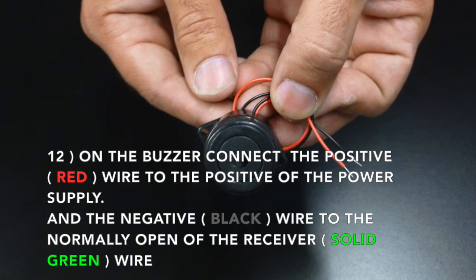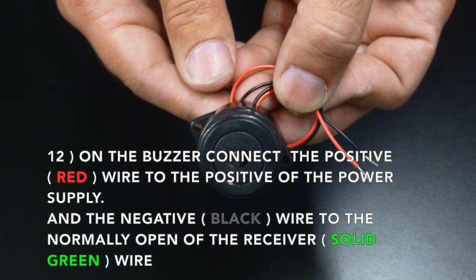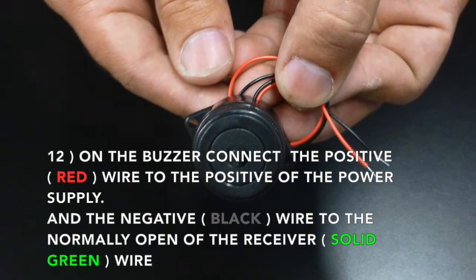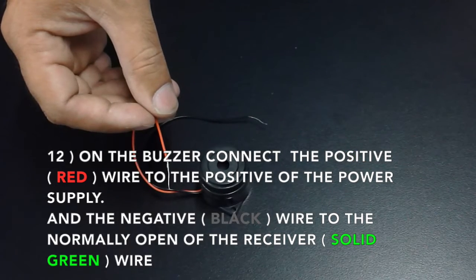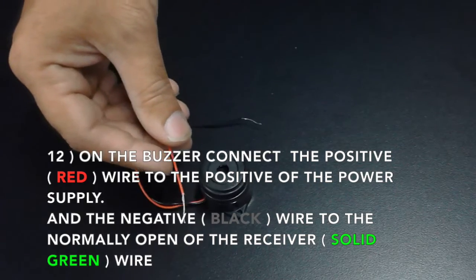Now on the buzzer, connect the positive or red wire to the positive of the power supply and the negative or black wire to the normally open or green wire of your receiver.